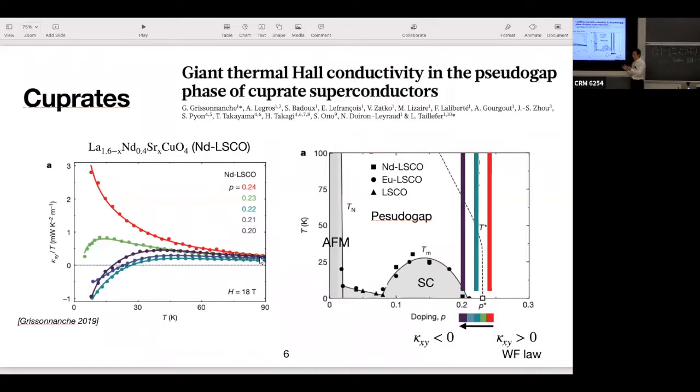In the metallic phase, we expect Wiedemann-Franz law. And indeed, it happens. So that's the red curve. They keep lowering the doping. And when you're just below the critical doping, you see the curve is bending down. It's going in the opposite direction, thermal Hall effect. You can keep going and going. You see that at lower temperature, kappa_xy is going down.